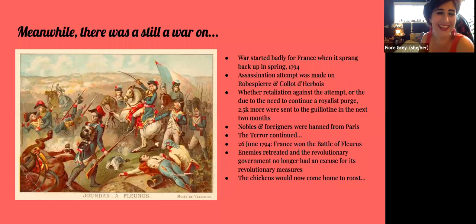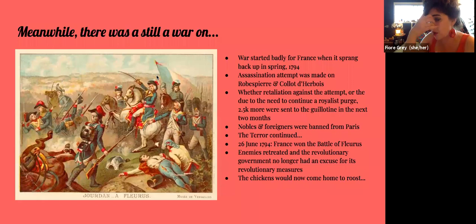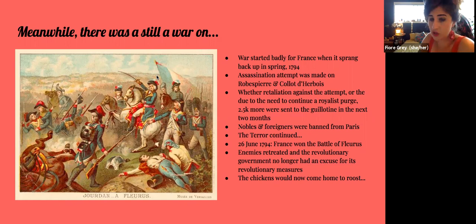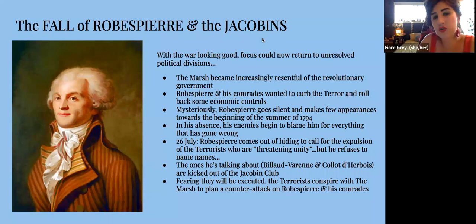Meanwhile the war was still on. It started badly, died down in winter, then started badly again in spring. There was an assassination attempt on Robespierre and Couthon. Whether in retaliation or to prevent counter-revolution, another two-and-a-half thousand people were sent to the guillotine over two months. Nobles and foreigners were banned from Paris. But on the 26th of June, France won the Battle of Fleurus, the enemies retreated, and the revolutionary government no longer had an excuse for its revolutionary measures — the chickens could now come home to roost.